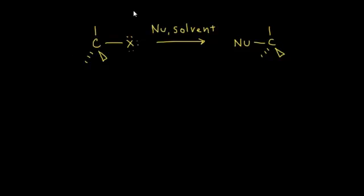The general reaction for an SN2 reaction looks a lot like the reaction for an SN1. We start with an alkyl halide, and we add to that a nucleophile and a solvent. The nucleophile substitutes for our halogen in the final product. The difference between an SN1 and SN2 reaction comes in the mechanism, so let's look at the details of the mechanism for SN2.